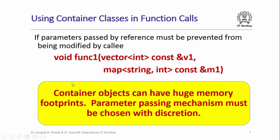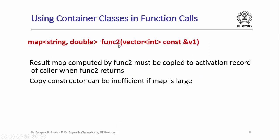If your container objects are always going to be small, you can pass them by value, but otherwise it is always preferable to pass them by reference. What happens if a function tries to return a container object? For example, the function func2 is trying to return a map with key type string and value type double. In this case, the map that func2 computed is going to be copied to the activation record of the caller function when func2 returns, by invoking the copy constructor of the map class instantiated with string and double. Every key-value pair gets copied, which can be very inefficient if the map is large.